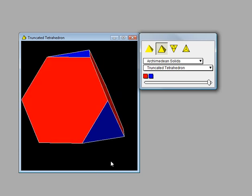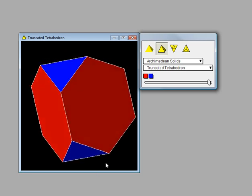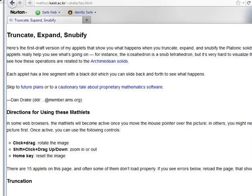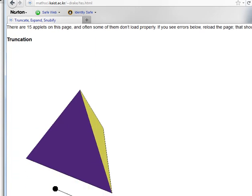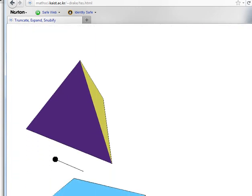Now let me show you how that is formed from a tetrahedron. Here I am at the truncate, expand and snubify website. Let's get down here to the tetrahedron.